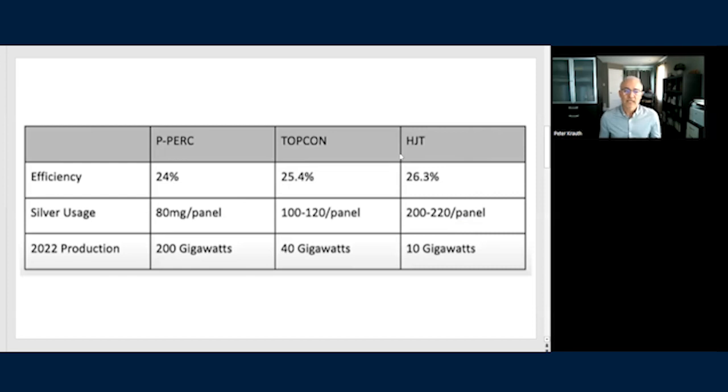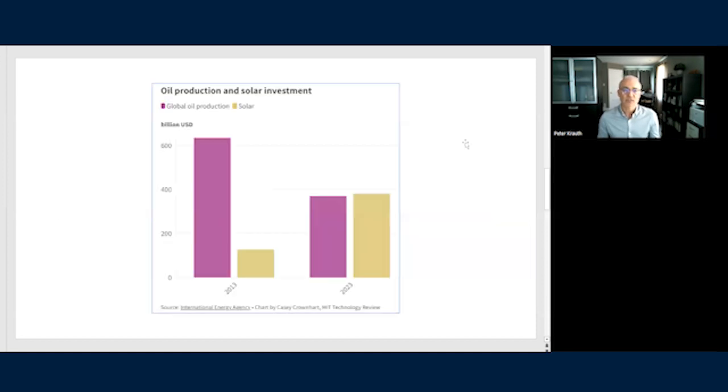PERC uses 80 milligrams of silver per panel. TOPCON uses 100 to 120 milligrams, and HJT uses up to 200 to 220 milligrams per panel. So in the case of TOPCON and HJT, that's from 50% to 150% more silver to gain better efficiencies.